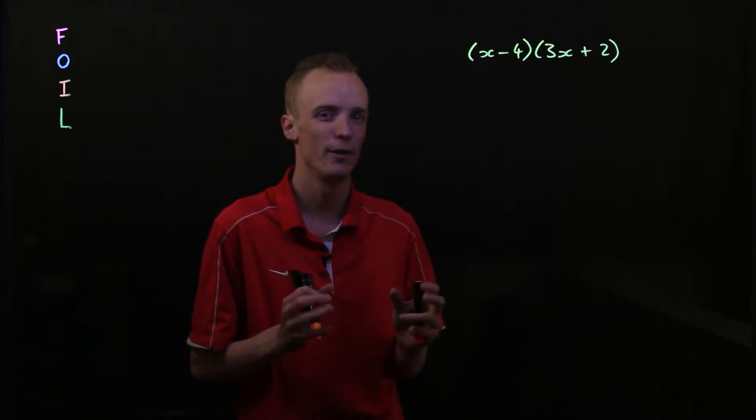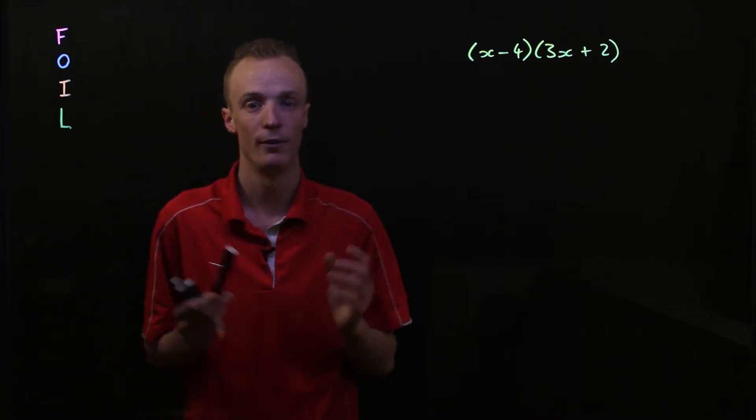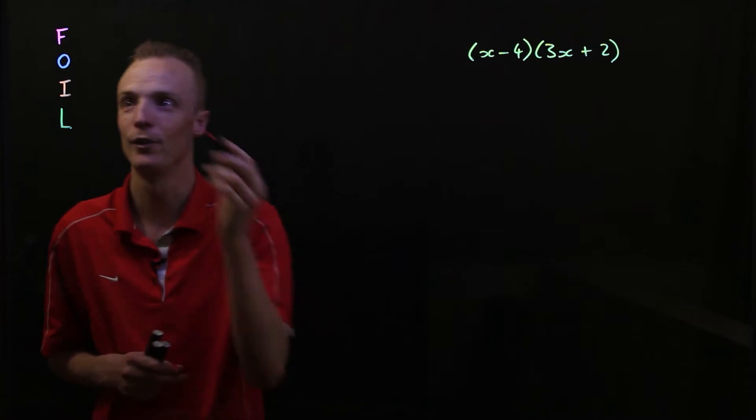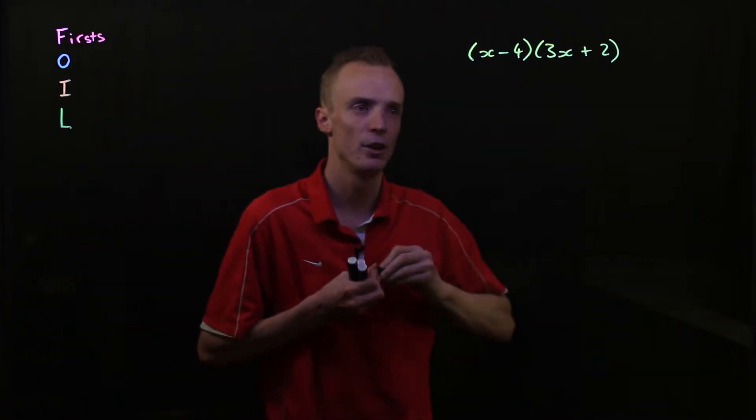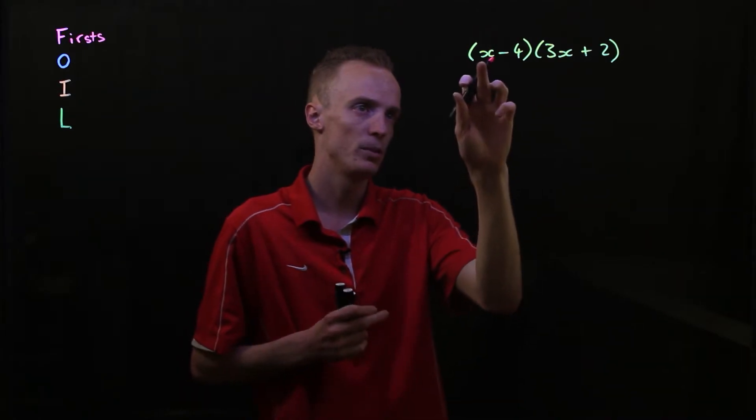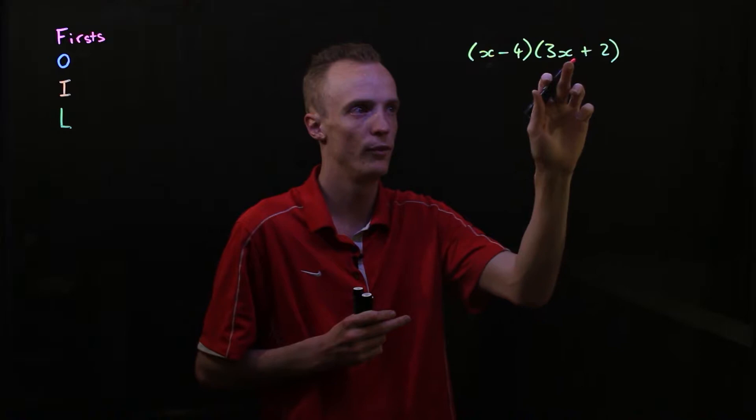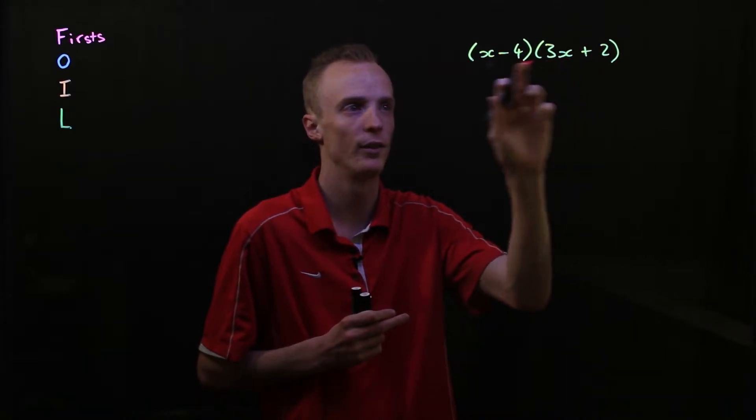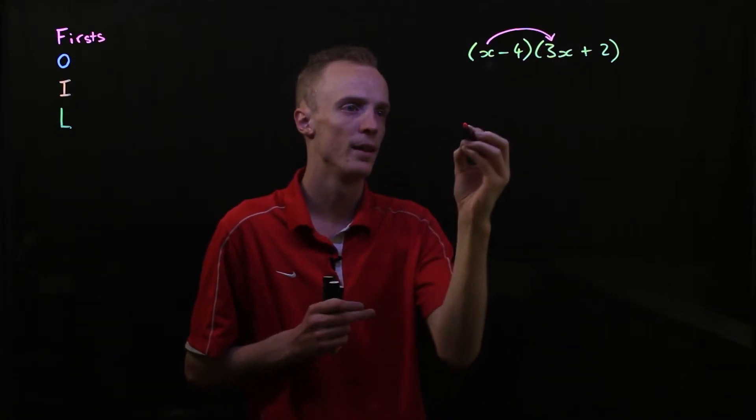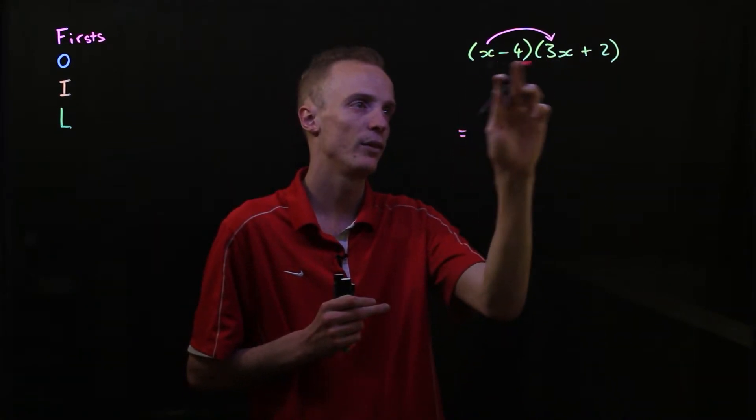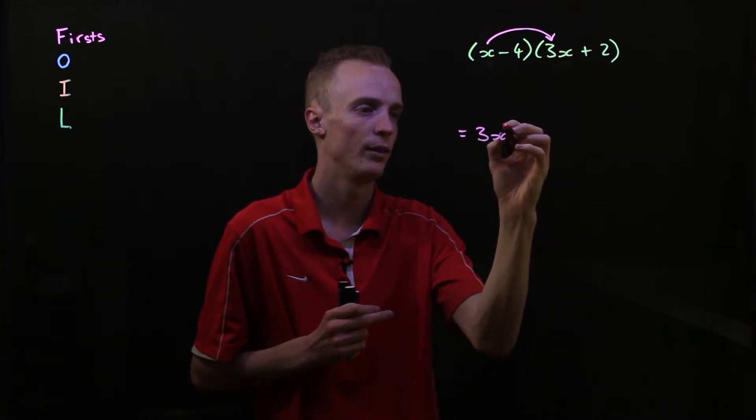Our first letter of our acronym, F, tells us what we need to multiply first, and the F stands for firsts. So what that means over here is we're going to multiply the first term of our first bracket with the first term of our second bracket. So this x here with this 3x here. So when we do that, this will equal x multiplied by 3x, which is 3x squared.